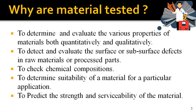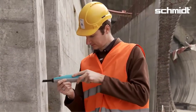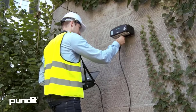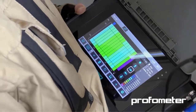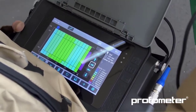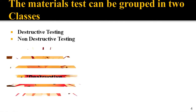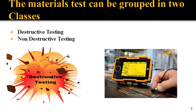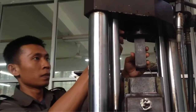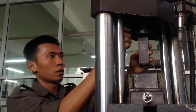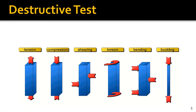We can divide material testing into two parts: one is destructive testing and the second is non-destructive testing. Destructive testing is a form of object analysis that involves applying a test to break down a particular material to determine its physical and mechanical properties such as strength, toughness, flexibility, and hardness.